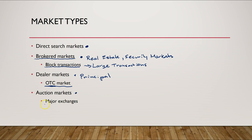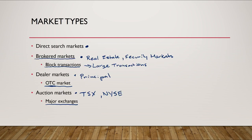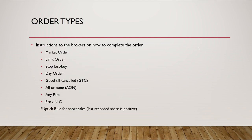The last type is auction markets. Almost all major exchanges, especially in Canada, are auction markets. Examples include the TSX and the New York Stock Exchange. These are common places where everybody is able to meet and exchange specific assets in a transparent fashion. Those are the four different market types. Now let's get into more detail about order types — instructions we give to our brokers on how to complete a transaction.